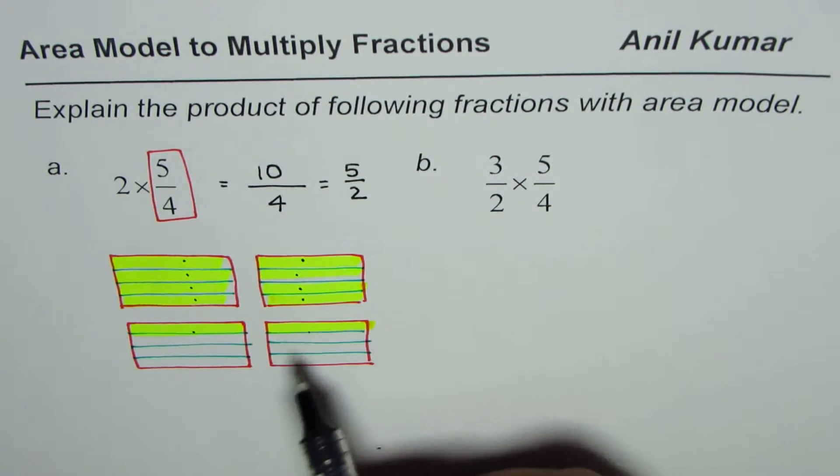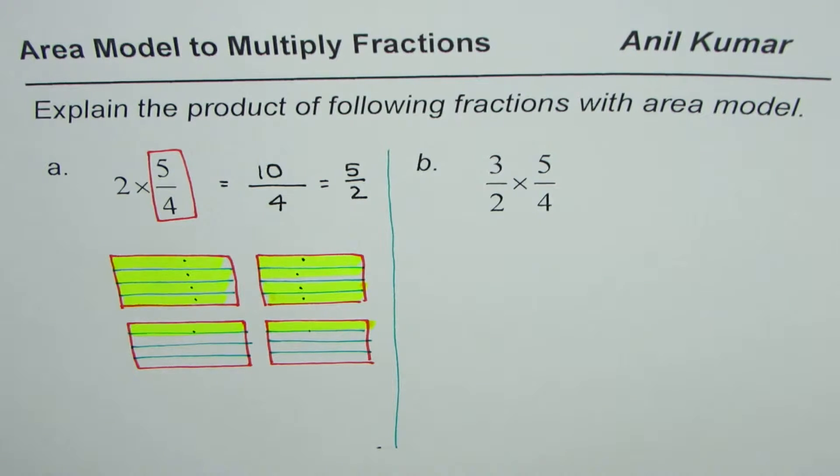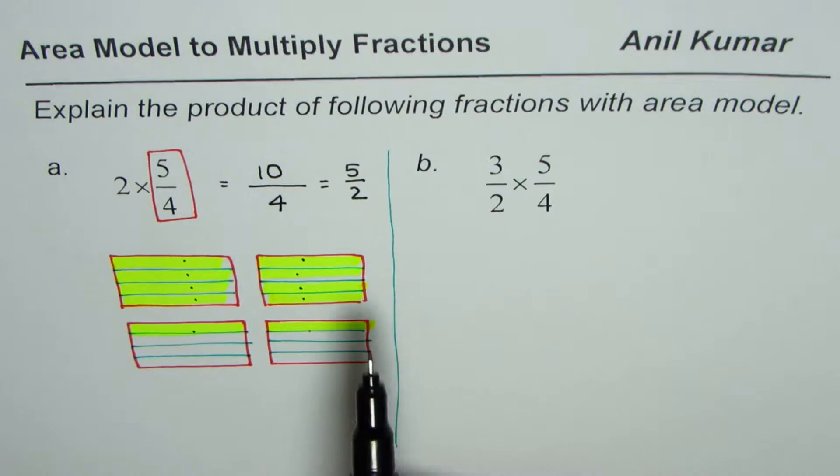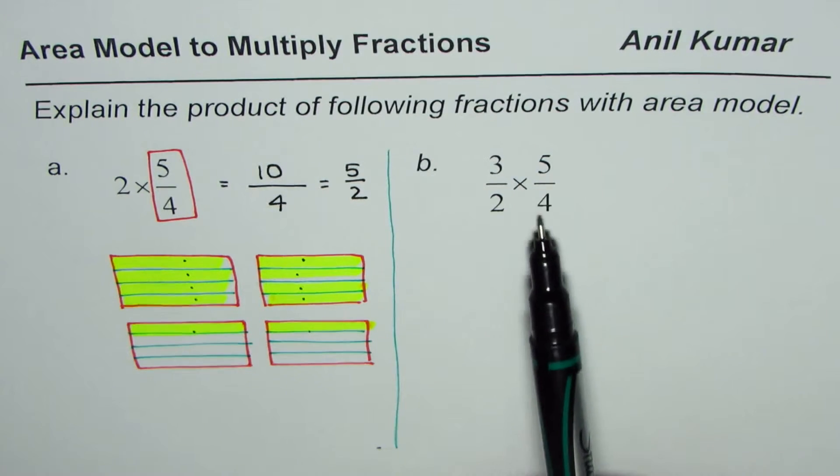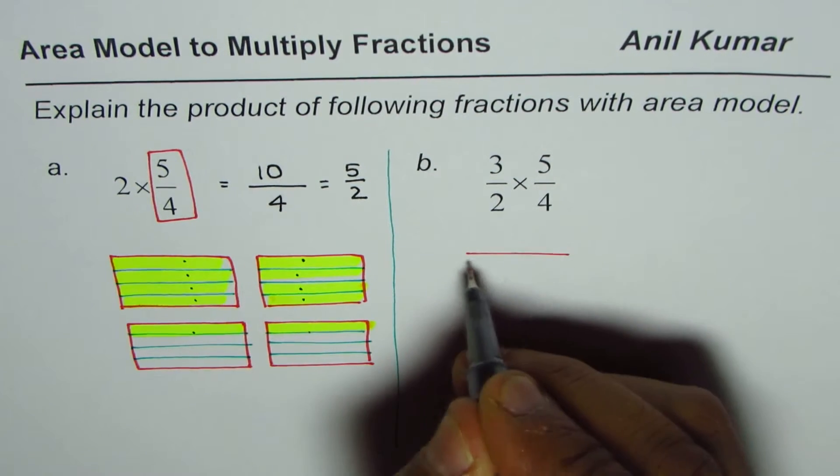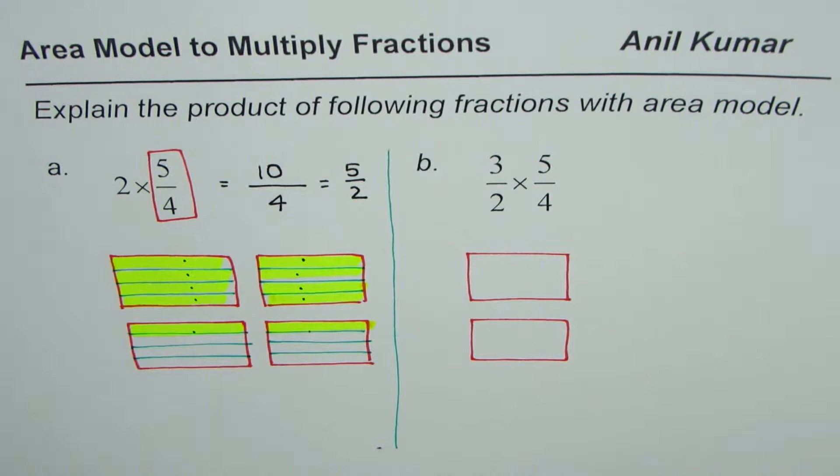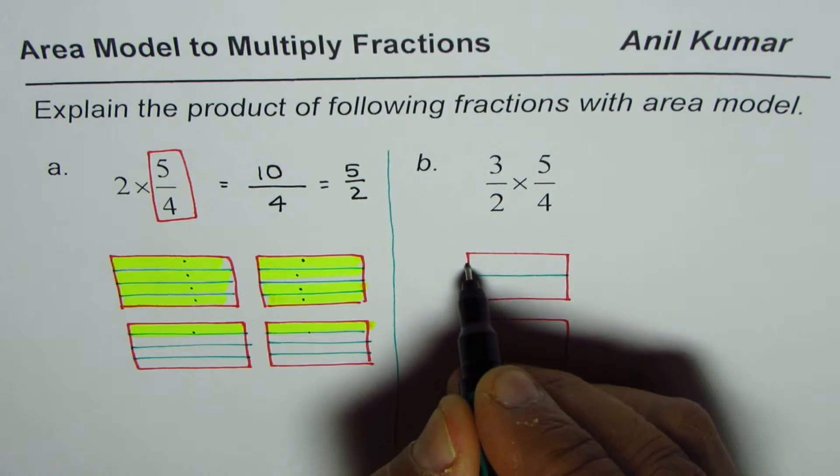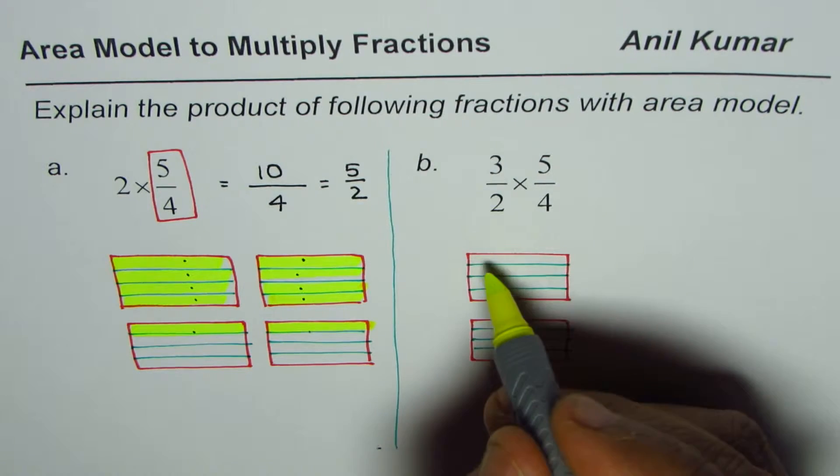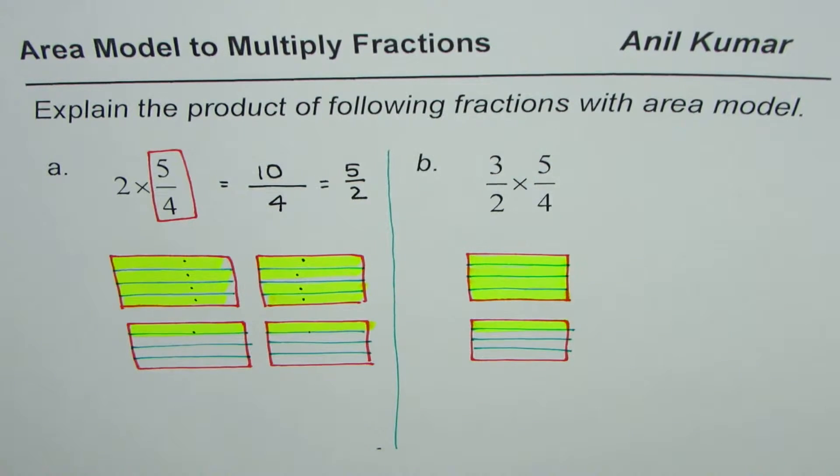So let's now do part B. I hope the steps are clear. We'll move on and do part B and see what difference it makes when it is not just a whole number, but another improper fraction. So 5 over 4 is what we did earlier. So I'm just copying that part. We just made a rectangle, made a copy of that, divided into 4 equal parts, selected 5. So it is 1, 2, 3, 4, and 5. So that is 5 over 4.